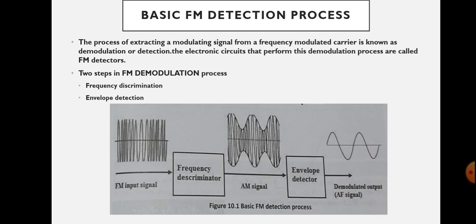There are two steps in the FM demodulation process or FM detection process. The first one is frequency discrimination and the second is envelope detection. These two processes in FM demodulation are frequency discrimination and envelope detection.